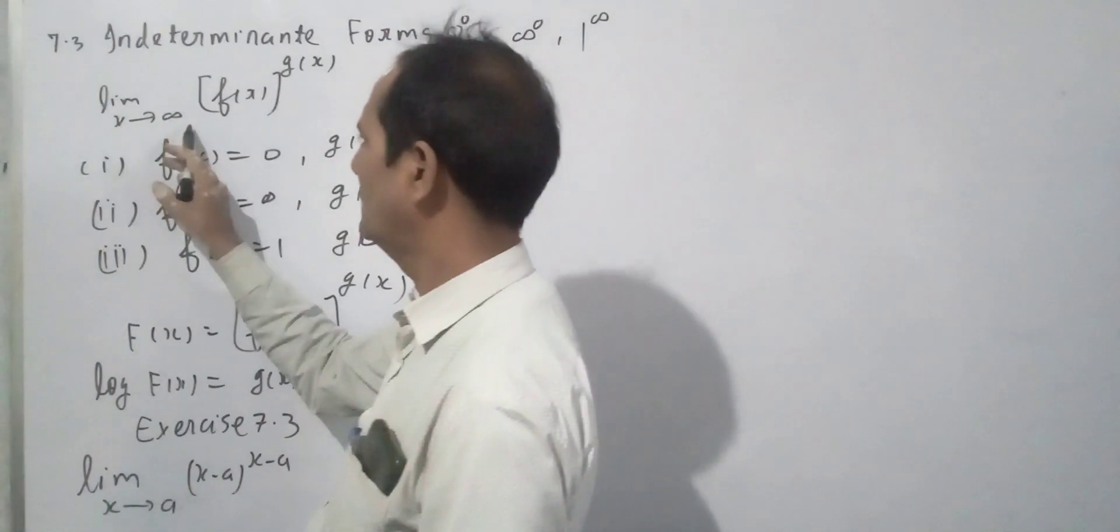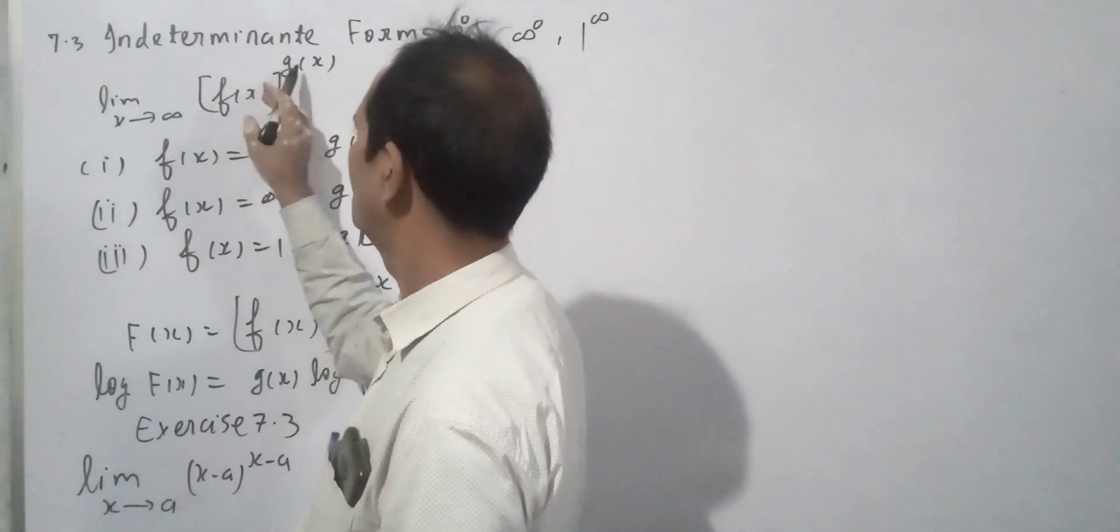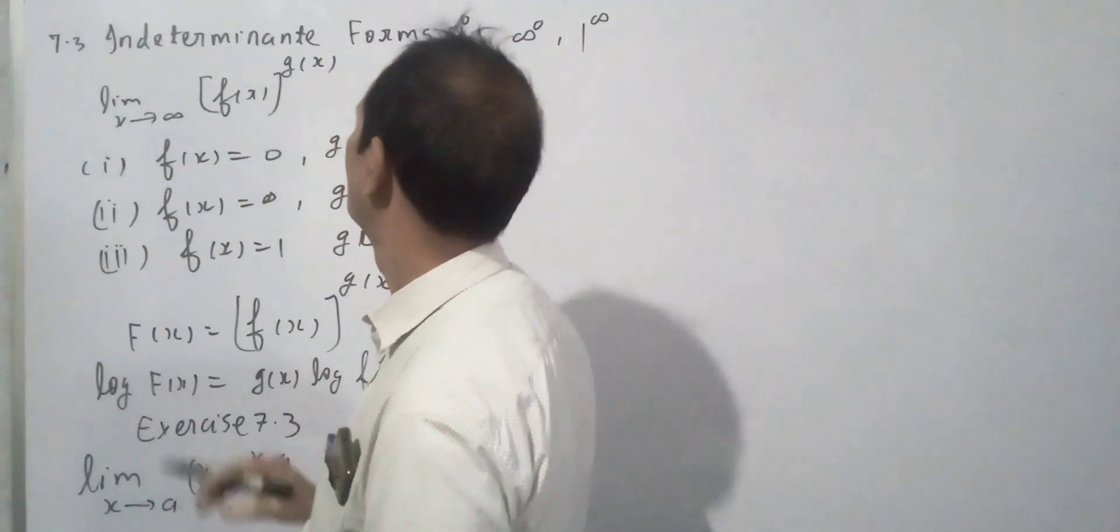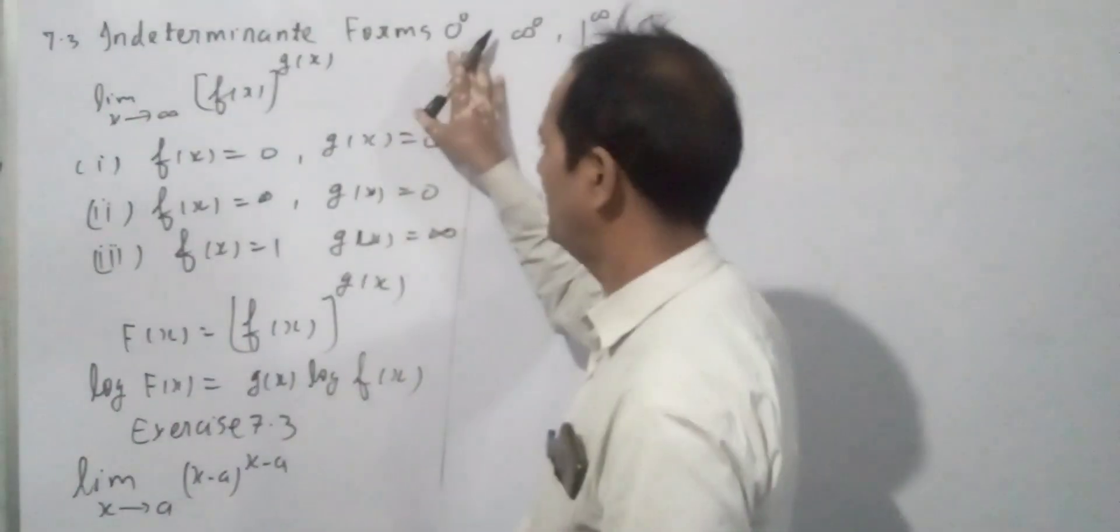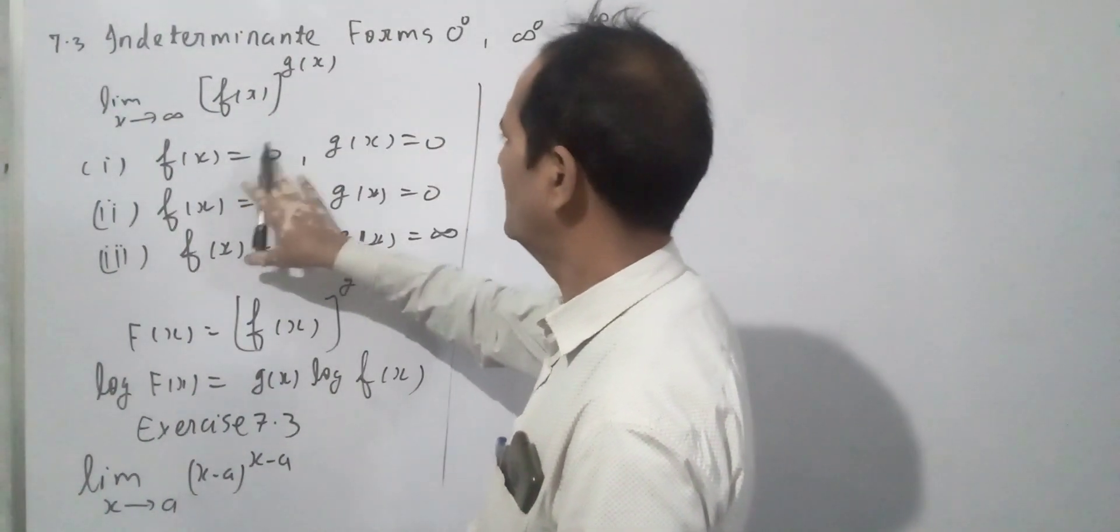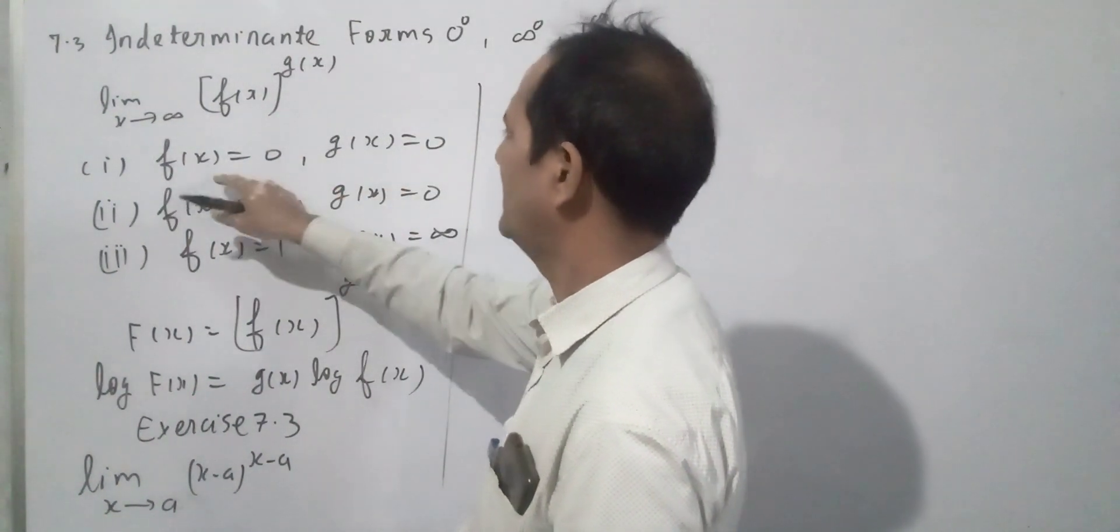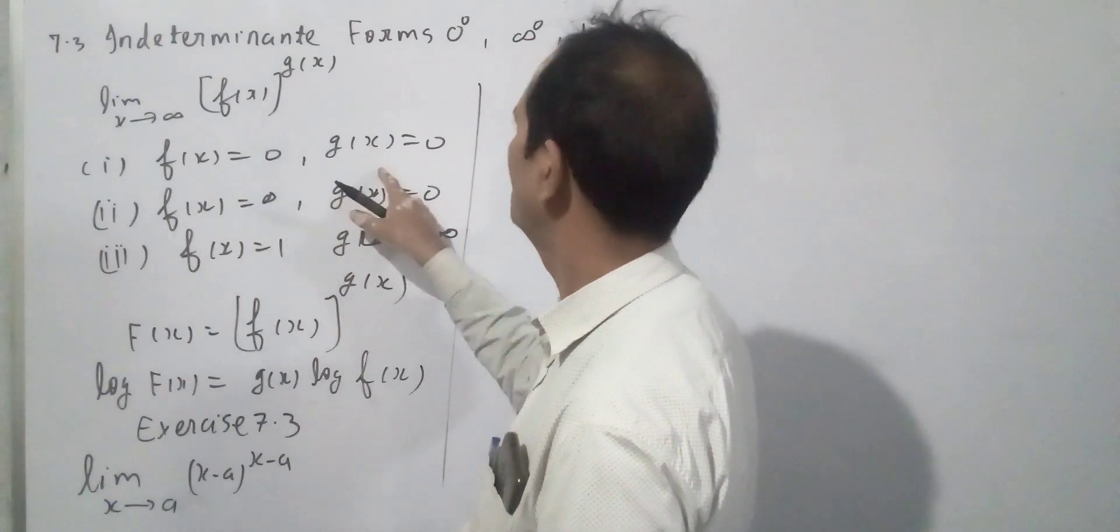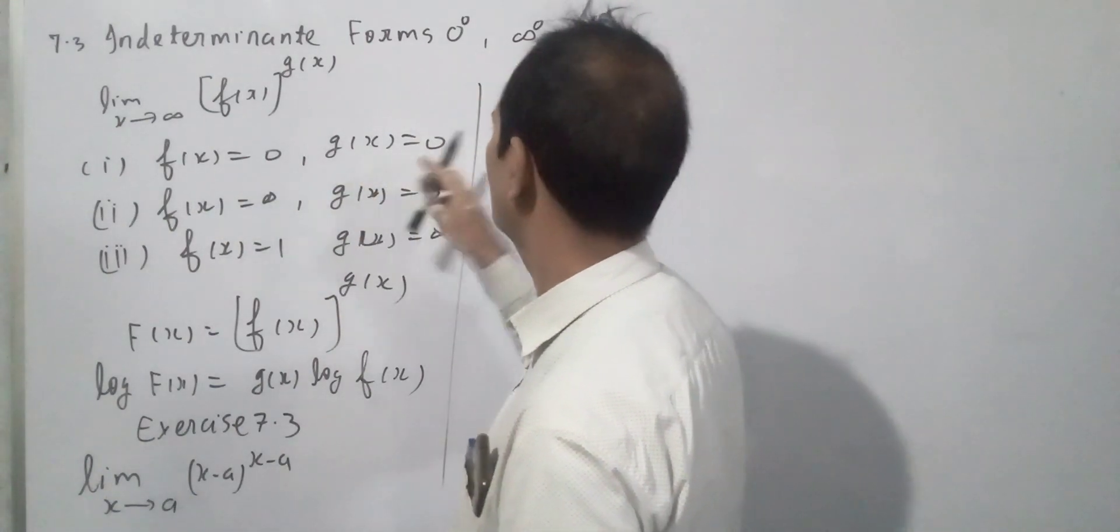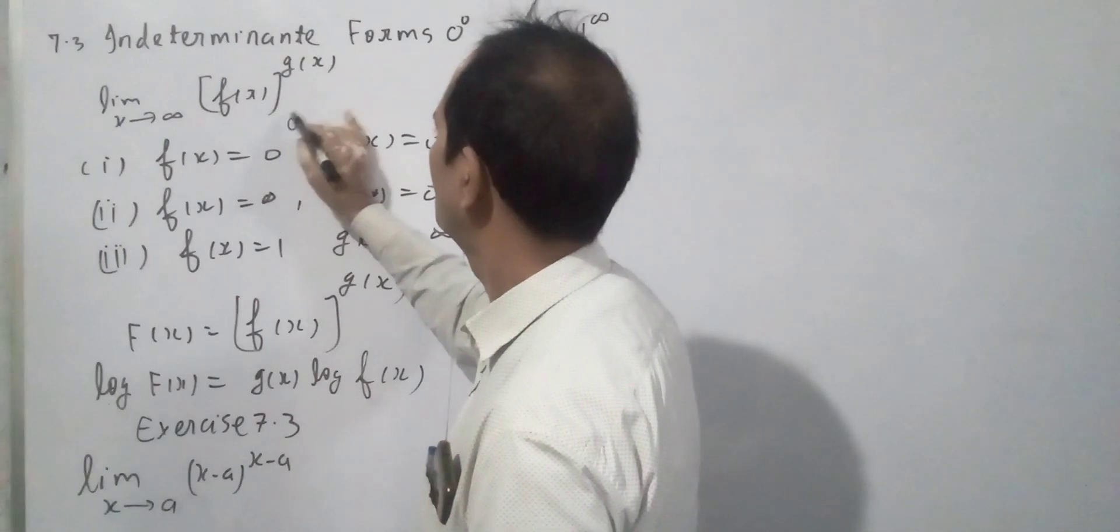So, just say limit x tends to ∞, f(x)^g(x). This value takes this form when f(x) is 0, g(x) is 0. If f(x) is 0, g(x) is 0, then which form will it be? 0^0.